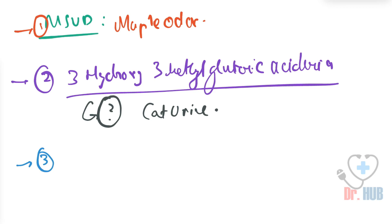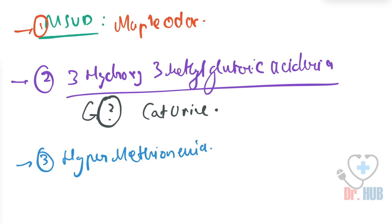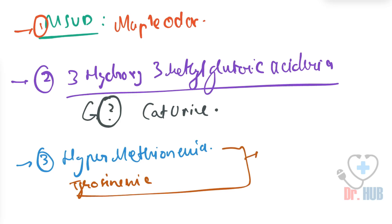The third question was: what is the urine odor in hypermethionemia and tyrosinemia? Both are associated with a boiled cabbage odor.